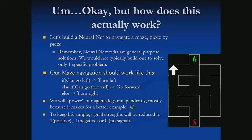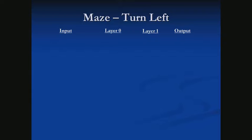Also, to keep our lives simple, our weights will only accept three unique values: positive 1 — we care about that input; negative 1 — we care about the opposite of that input; or 0 — we don't care about that input.